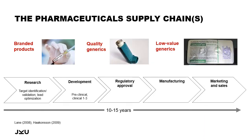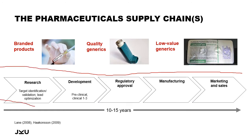Let's start by looking at the supply chain for pharmaceuticals. Harkanson — and I really recommend this article for learning more about the pharma industry — argues that there's not one but three different supply chains in the pharma industry, and I will illustrate these using examples of products currently in the headlines. The first strand of pharma production is the supply chain for branded products, an example being the vaccine we all hope for to make us immune against COVID-19 infection.